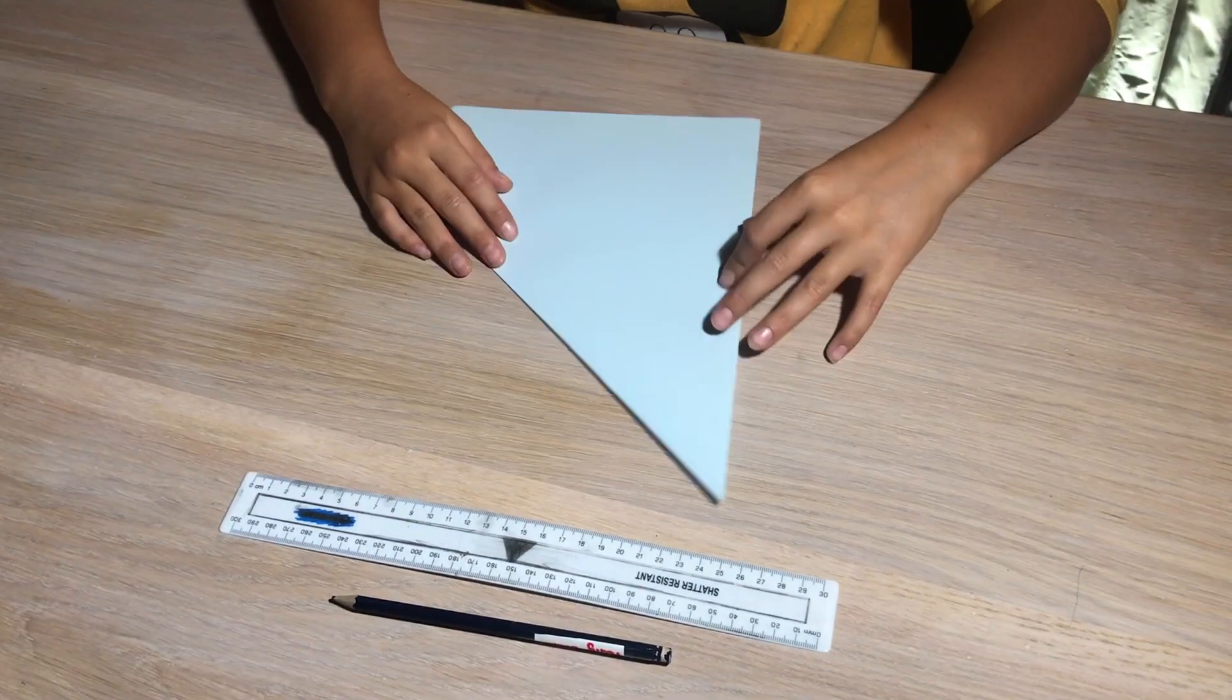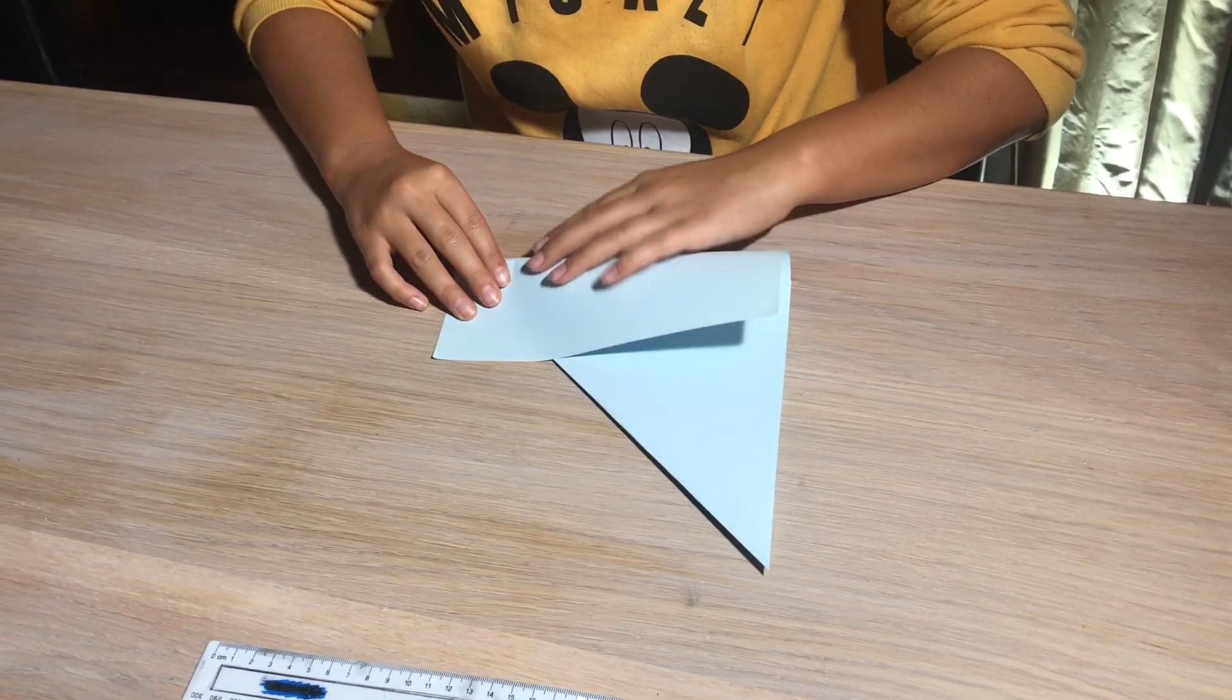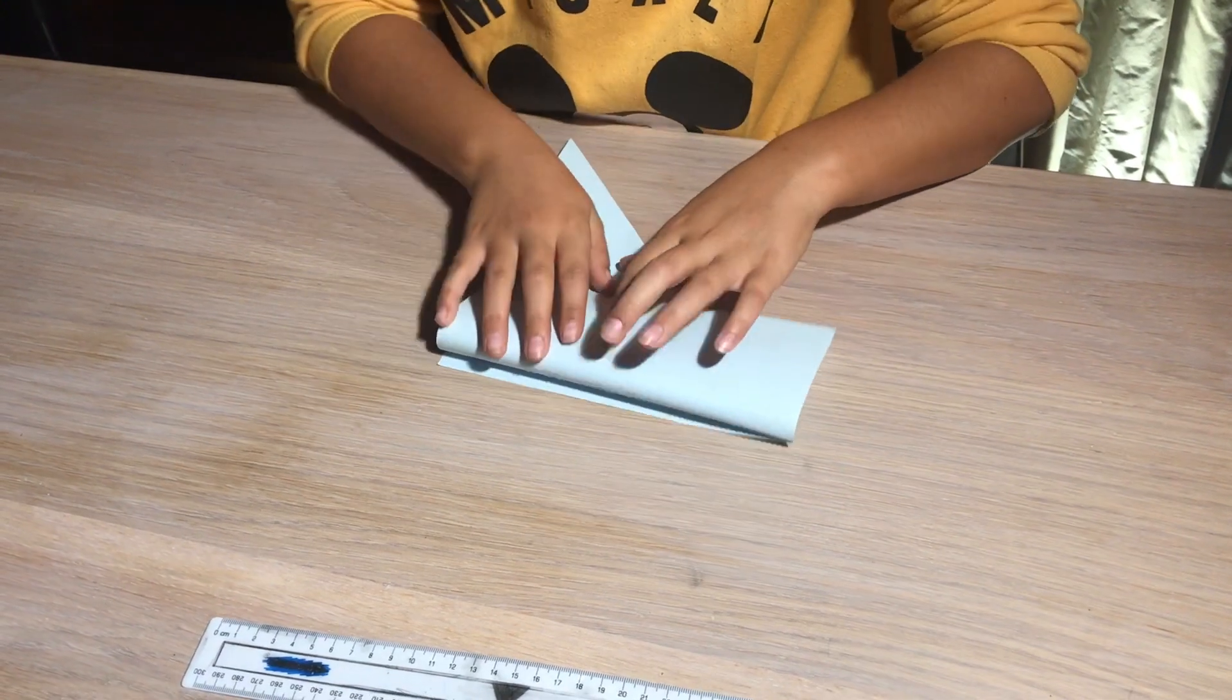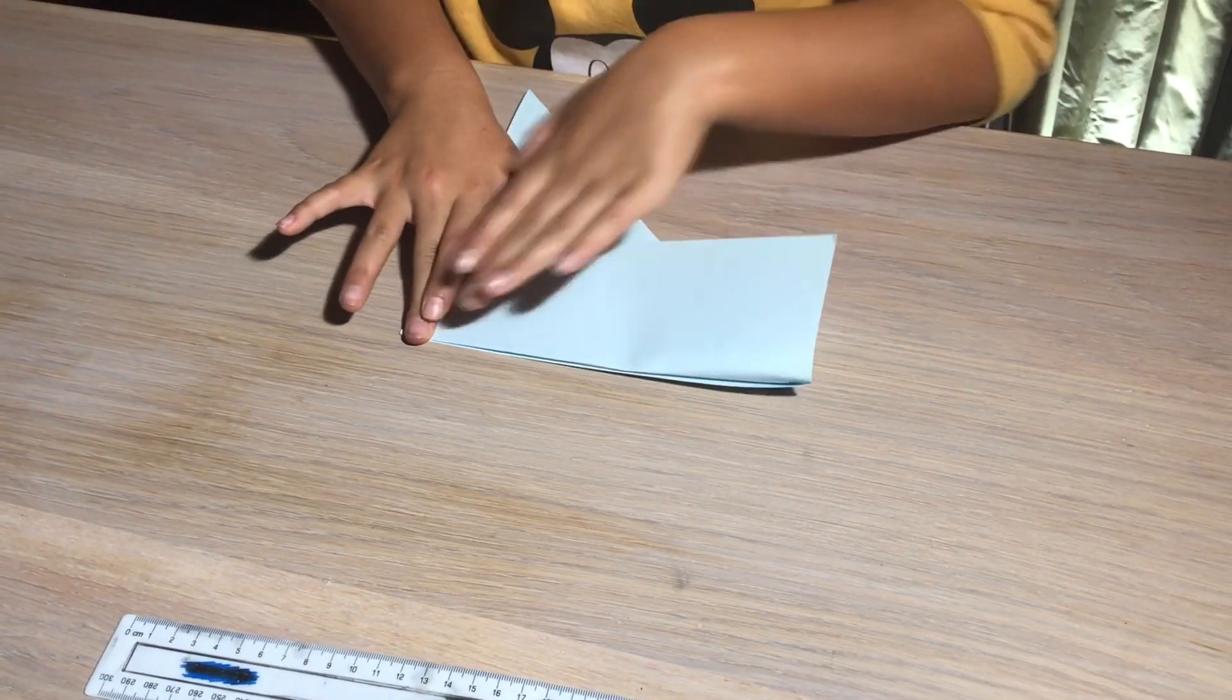So we turn the whole piece of paper over, like this, and then we fold this part so it's equal to the other part.